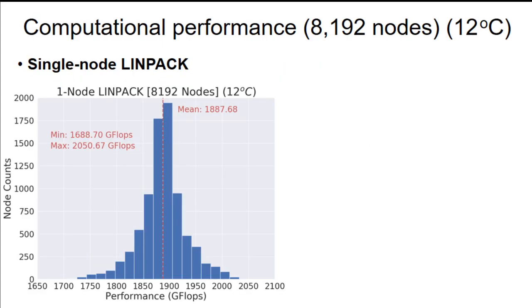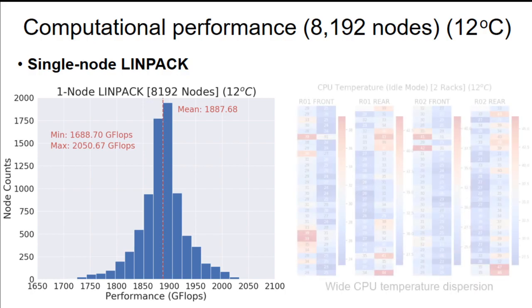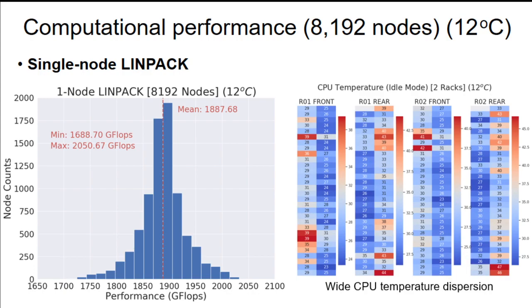And this graph shows the histogram of the LINPACK performance obtained from 8,192 nodes using the regular temperature set point or 12 degrees Celsius. And it also presents the minimum, maximum, and mean performance. And in order to investigate the relationship with the running temperature, we analyze the CPU packet temperature at idle mode. And this graph shows, or heatmap, shows the packet temperature of the CPUs from a single CDU, which is responsible for two compute racks. In this case, we are showing the racks 0.1 and 0.2. And we can see a wide temperature dispersion even for those compute nodes sharing the same rack.